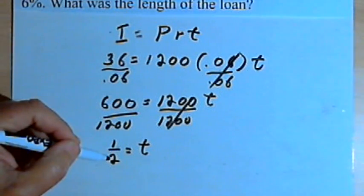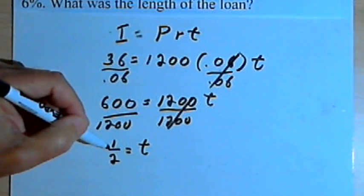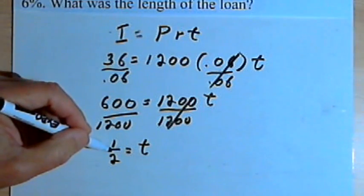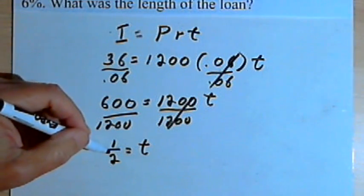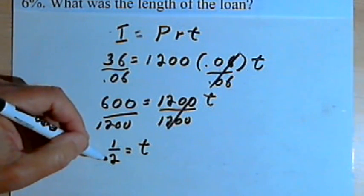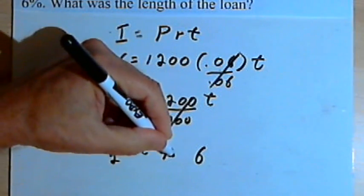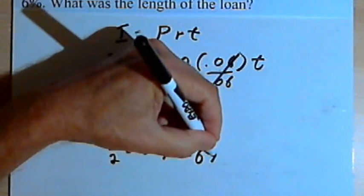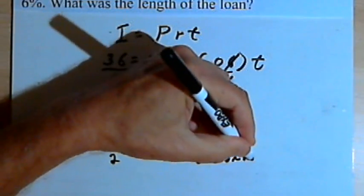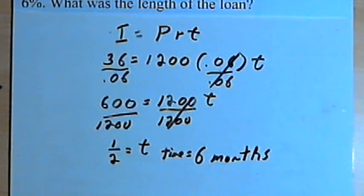So this is one-half year. When we deal with less than a year, very often we'll change that into months. So if a year is 12 months, a half a year is 6 months, so the time equals 6 months.